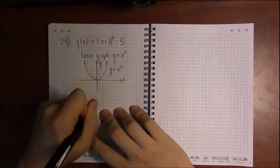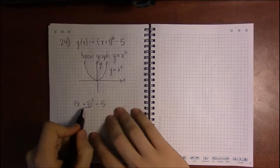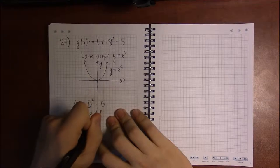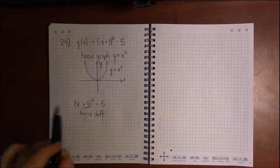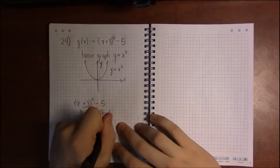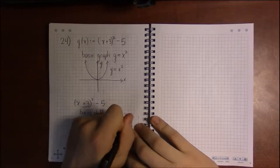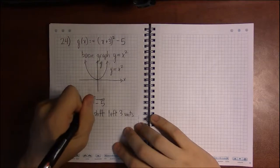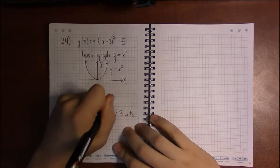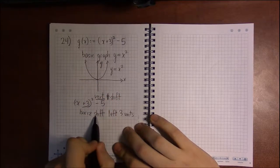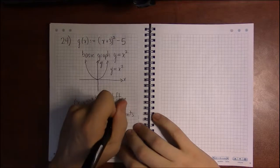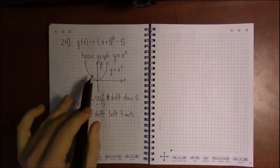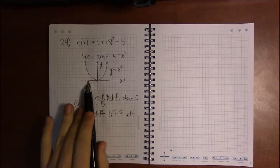There's two things to do here. The plus 3 is as close to the x as it can get, so this is a horizontal transformation, a horizontal shift. Horizontal is always backwards. So instead of plus, instead of to the right, this is going to be left 3 units. And the minus 5 is away from the x, so this is going to be a vertical transformation, or a vertical shift. It's going to be a shift down by 5.